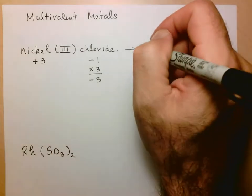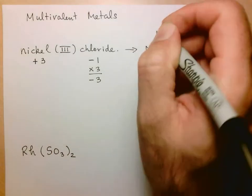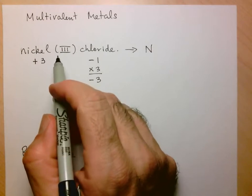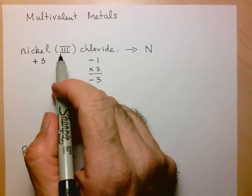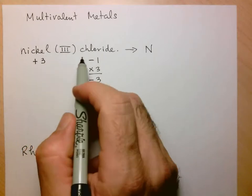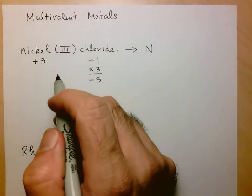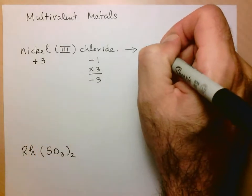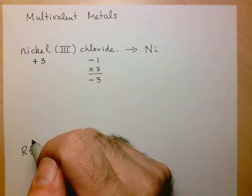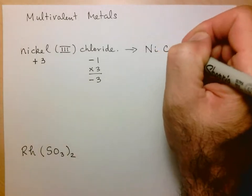Now one thing you'll notice is that when I write the chemical formula, I am not including which particular charge of nickel we're working with. So while we see it explicitly in the name, we don't see it in the formula. So we've got nickel, and we only need one of those, already has a charge of plus 3, but we need 3 chlorides.